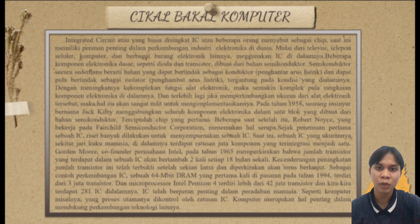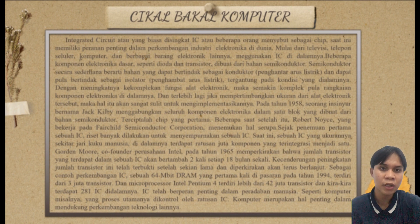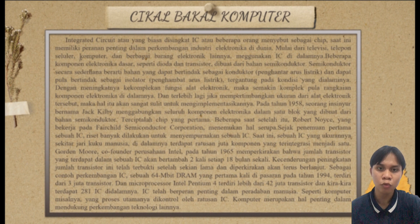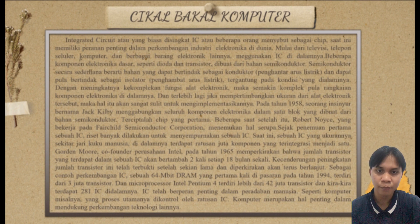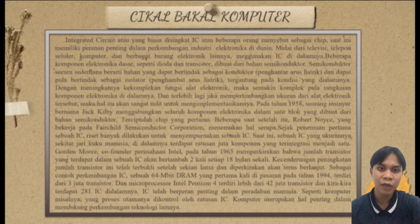Sebagai contoh perkembangan IC: sebuah 64 MB RAM yang pertama kali dipasarkan pada tahun 1994 terdiri dari sekitar 3 juta transistor, dan mikro prosesor Intel Pentium 4 terdiri lebih dari 42 juta transistor dan kira-kira terdapat 281 IC di dalamnya. Bahkan berdasarkan International Technology Roadmap for Semiconductor, diharapkan akan tersedia sebuah chip yang terdiri dari 3 miliar transistor pada tahun 2008.